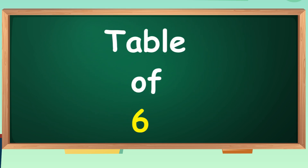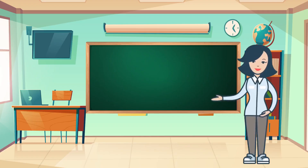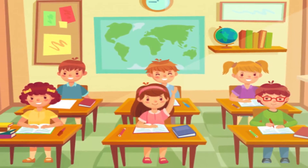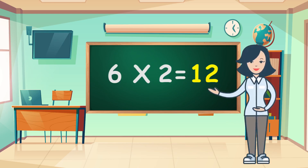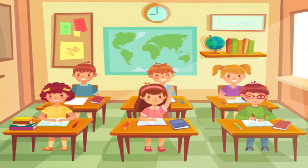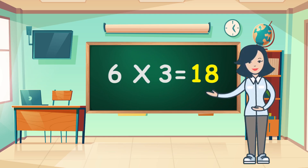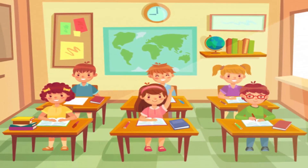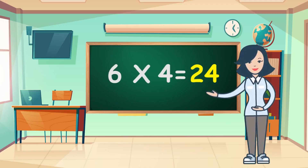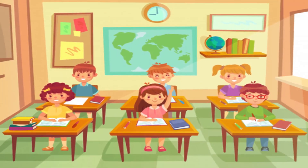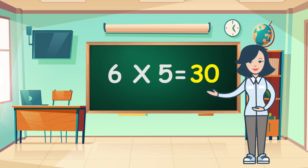Table of Six. Six ones are six. Six ones are six. Six twos are twelve. Six twos are twelve. Six threes are eighteen. Six threes are eighteen. Six fours are twenty-four. Six fours are twenty-four. Six fives are thirty.